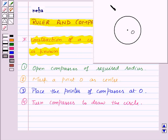So this is our required circle with the given radius.